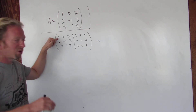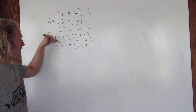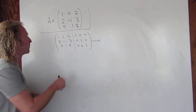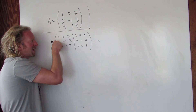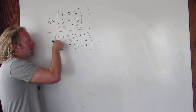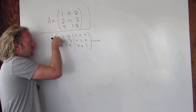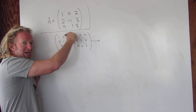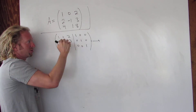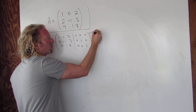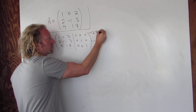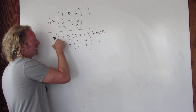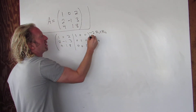Step 1: make this a 1 — it's already a 1, done. Now make these zeros. We're going to multiply row 1 by negative 2 and add it to row 2, and multiply row 1 by negative 4 and add it to row 3. When I say multiply, I mean multiply the entire row.